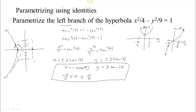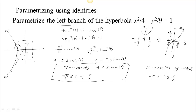You could also parameterize the left branch going the other direction by putting a negative in front of y. Choose x equals negative 2 secant t with t between −π/2 and π/2 to ensure x is always negative, then set y equals negative 3 tan t. The graph of y is tangent flipped and stretched, so y values decrease as time goes forward, meaning we trace the left branch from high down to low — the opposite direction.